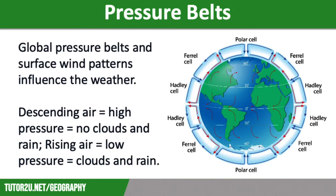These pressure belts move north and then south over the year. The movement of low pressure bands from the north and then to the south of the equator explains why some countries are dry for most of the year, but then experience two rainy seasons.